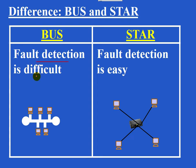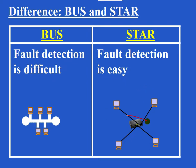Fault detection is difficult in BUS topology but easy in star topology. The central cable has no knowledge of each host connected to the network, so if any one host fails, it cannot be identified. In star topology, the switch has information about every host connected to the network, so if any host fails, the information is available with the switch and fault detection is easy.